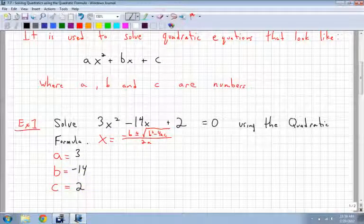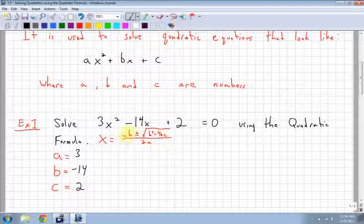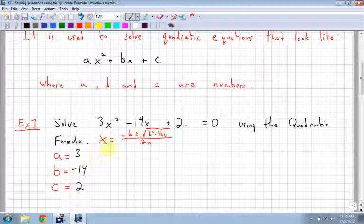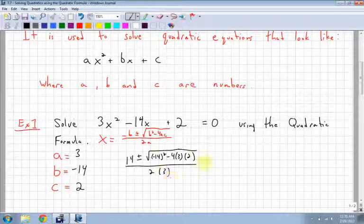And my c value is 2. Now we just plug all our values in. Remember what I said about the negative b? Well, if b is already negative, it's minus 14, and I have negative b, what do you think happens? Right. It changes to positive 14. So I get 14 plus or minus the square root of b squared is 14 squared minus 4 times 3 times 2, all over 2a, which is 2 times 3.